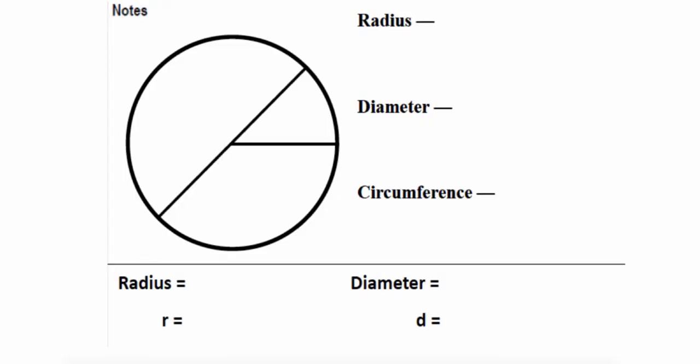Before we can start on circumference, we need to know some vocabulary about a circle. We have three vocabulary terms. The first is the radius. It's half the distance across the circle. I'm going to label it right here on the drawing as well. This short distance, from the center out to the side, is the radius. It's half the distance across.